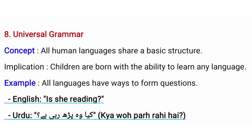Moving toward universal grammar: the universe means all the world, and grammar means a set of rules. So universal grammar means creating sentences with the same rules that apply to all languages of the world. All human languages share a basic structure, and children are born with the ability to learn any language. The environment just triggers that language — for example, the same sentence structure applies in English and in Urdu.